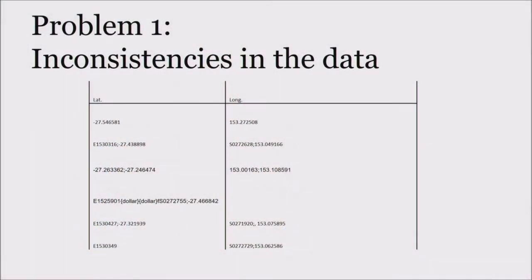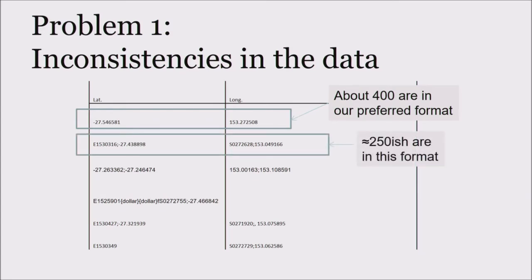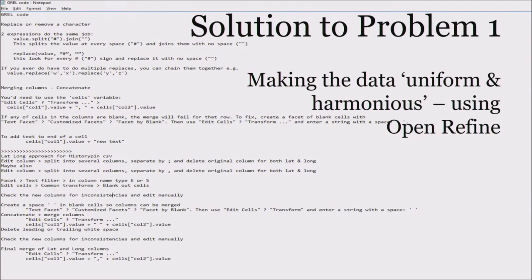The first problem was inconsistencies in our exported data, particularly in the latitude and longitude columns which describe the location of the map. In that 800-line spreadsheet, about 400 lines were in the first format, approximately 250 were in a second format, and the remaining 150 were in a variety of different formats. We needed to make them all the same to work with them.